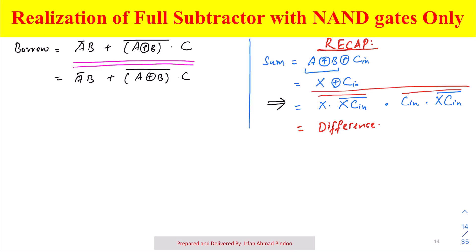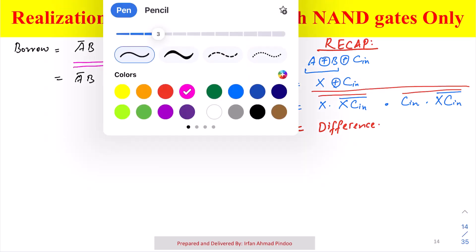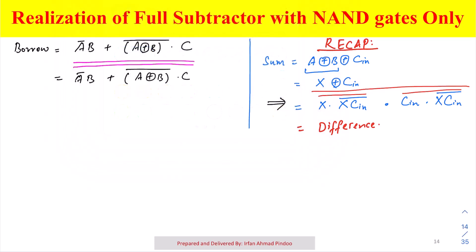After this, what we will do? We will break the internal bar and use De Morgan's law. X plus Y whole bar is nothing but X bar dot Y bar. That is what we will do here with respect to the internal one.